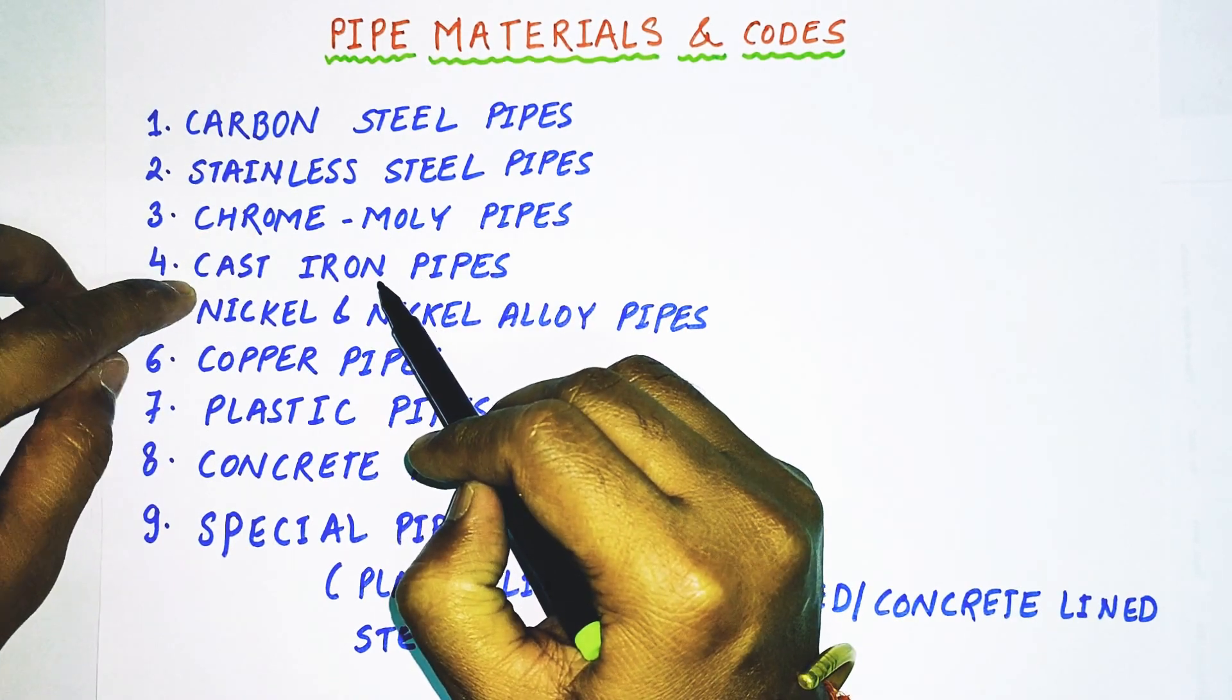In chrome molly we have one very popular specification, ASTM A 335. ASTM A 335 has many grades, for example ASTM A 335 P1, then P2, P12, P23, and so on.